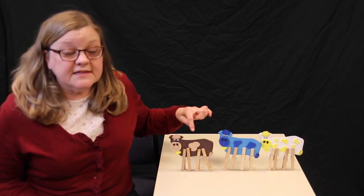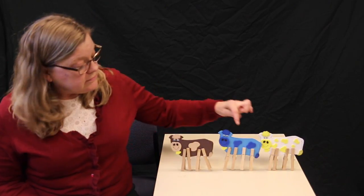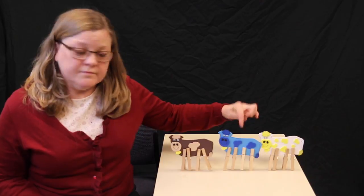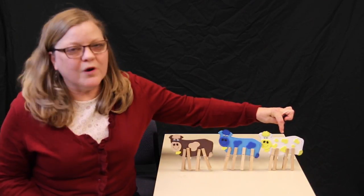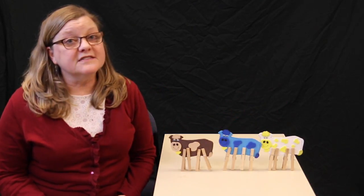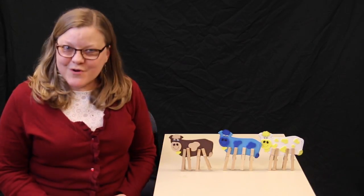Now listen to this. This little cow is brown. This little cow is blue. This little cow is white and yellow, but they all say moo. That's right.